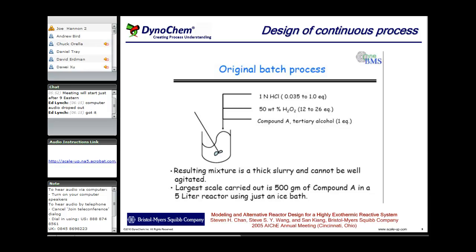But back in 2005, in Cincinnati, Steve Chan and colleagues from Bristol Myers looked at a different reason for wanting to go continuous. This was a peroxide reaction, highly exothermic, and large quantities of hydrogen peroxide involved in making the reaction go, and originally intended to run this reaction as a batch or fed batch system.